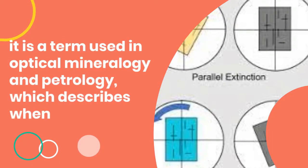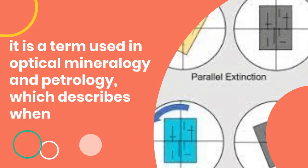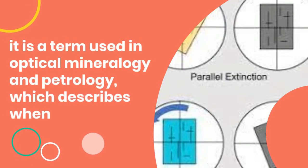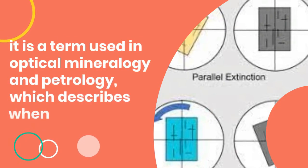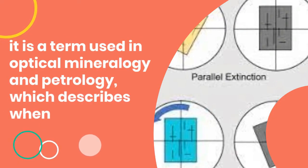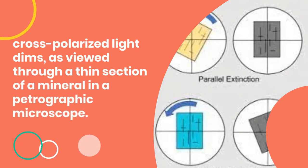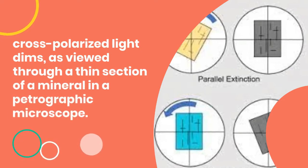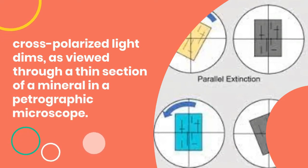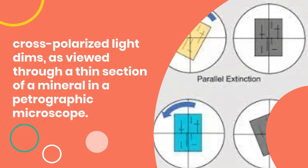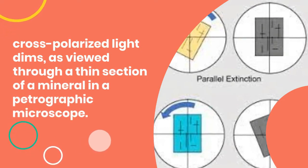Extinction is a term used in optical mineralogy and petrology, which describes when cross-polarized light dims as viewed through a thin section of a mineral in a petrographic microscope.